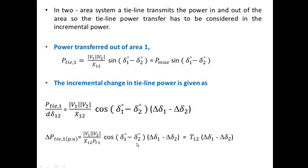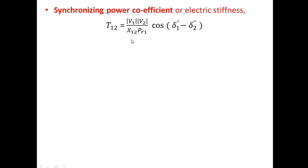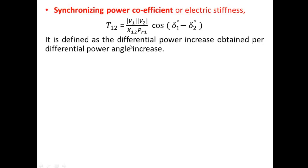The electrical stiffness T12 maintains the rigidity in the tie line power. It is defined as the differential power increase obtained per differential power angle increase — that is, the change in tie line power with respect to change in power angle. Now we need to find the relation between tie line power and frequency. We know that ω = 2πf, and we can relate ω to the rotor angle δ.